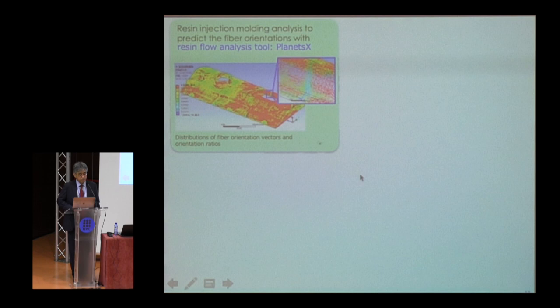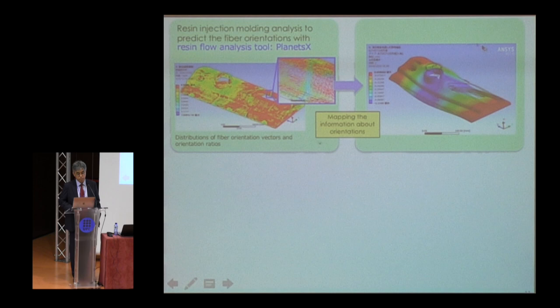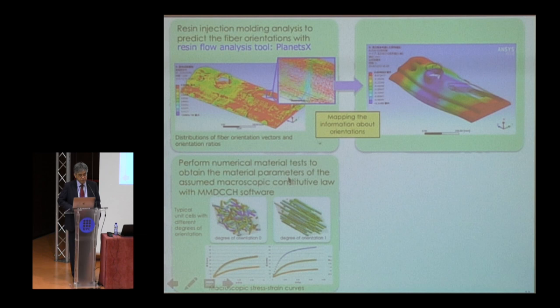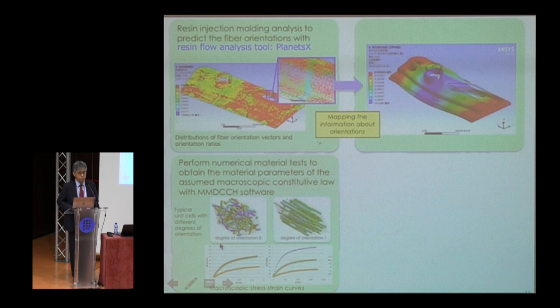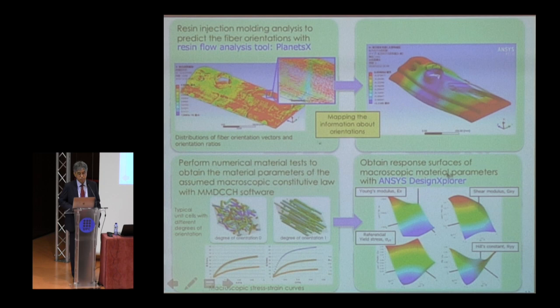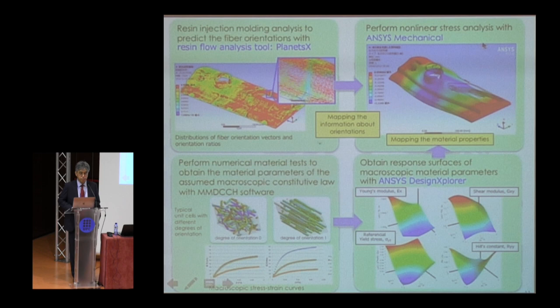Let me show you a simple example. First, we perform resin injection molding analysis to predict the fiber orientation on this macrostructure. Then we map the fiber orientation information onto this region. At the same time, to obtain the macroscopic material parameters of the assumed macroscopic constitutive law, we perform numerical material tests to get macroscopic stress-strain curves using typical unit cells with different degrees of fiber orientations. Using this data, we obtain the response surfaces of the macroscopic material parameters, which we map onto this structure to perform the nonlinear stress analysis on the macrostructure.